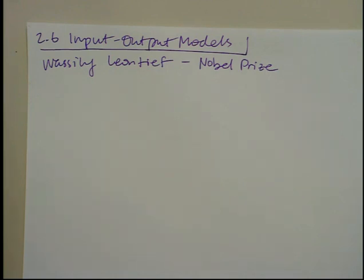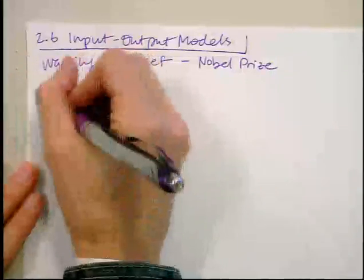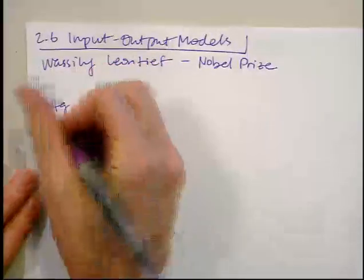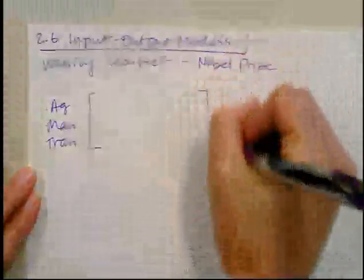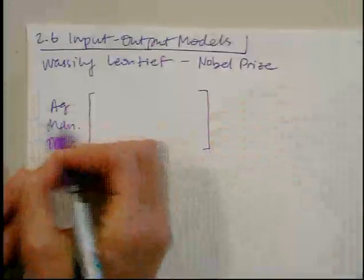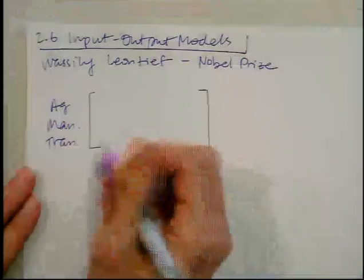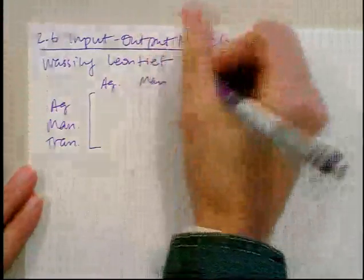We're going to start off with an example of a very simple market. In this first market economy, we've got just three commodities. I'm going to label those commodities in a three by three matrix: agriculture, manufacturing, and transportation.